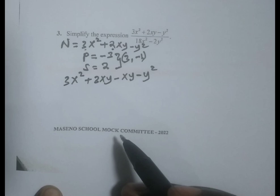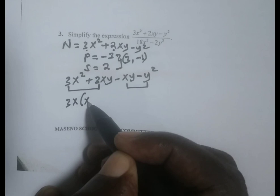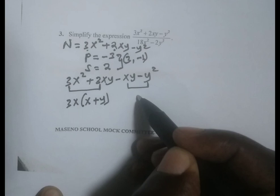From there we can factorize them in pairs. Between 3x squared and 3xy, 3x is common. We multiply by x, then multiply by x plus y.